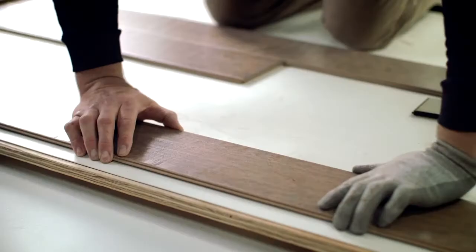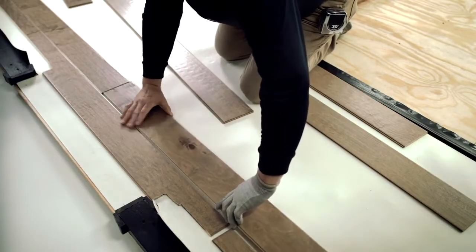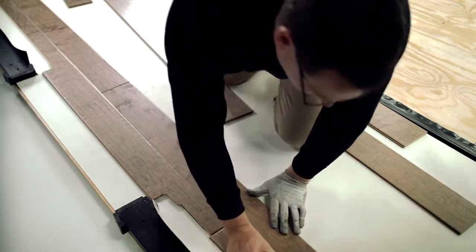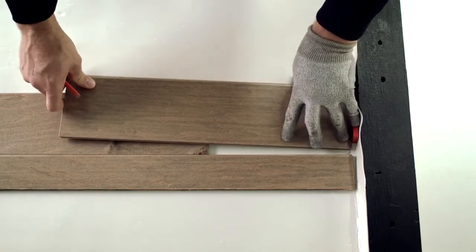Now that you've established the layout and figured the width of your first and last rows, we're going to fit the first two rows together without gluing. Start with the first plank in the right corner and connect the second plank at the end joint. Continue this process until you reach the end of the first row. You will probably need to cut the final plank to fit.